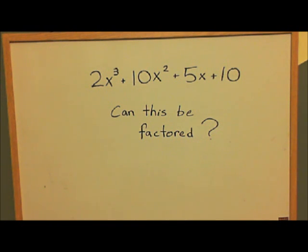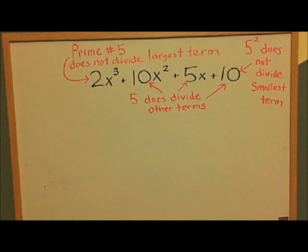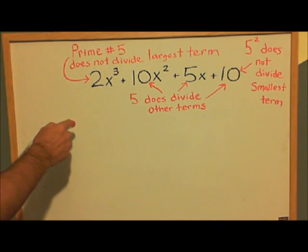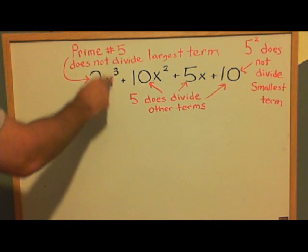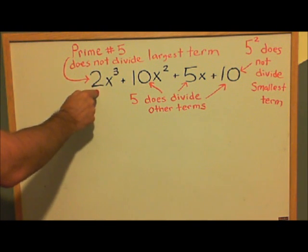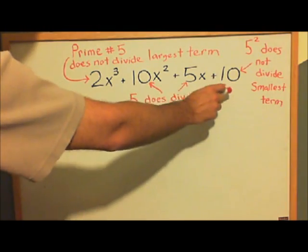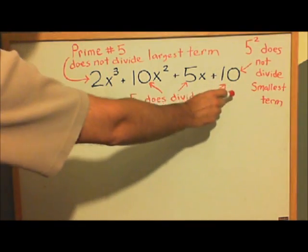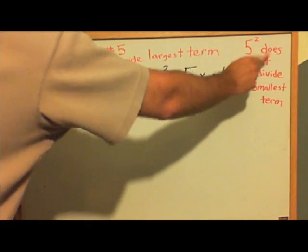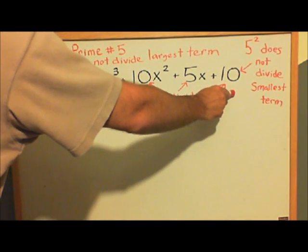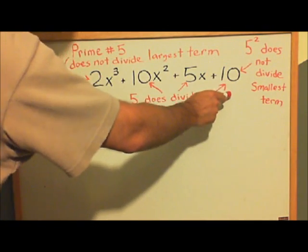Now this proof relies on prime numbers, and in this case we're going to be using the number 5, which meets three criteria. First, 5 does not divide the coefficient of the largest term of the polynomial. Second, 5 does divide the coefficients of all the other terms—it divides 10, 5, and 10. And third, 5 squared does not divide the smallest term, so 25 does not divide 10.